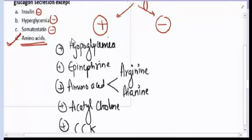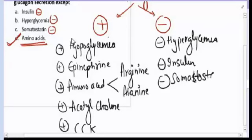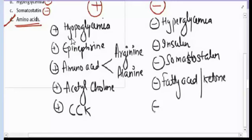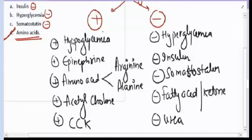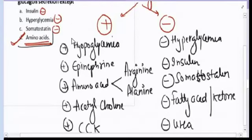Glucagon secretion is inhibited by hyperglycemia, insulin, somatostatin, fatty acids and ketones in the blood, and urea. So the correct answer for question number fifteen is amino acid — amino acids rather stimulate glucagon secretion.